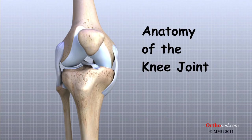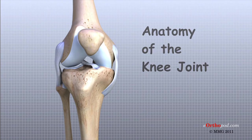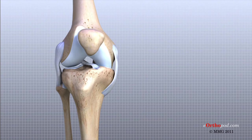A well-functioning knee joint is critical to mobility, including standing, walking, and running. To better understand how knee problems occur, it is important to understand some of the anatomy of the knee joint and how the parts of the knee work together to maintain normal function.